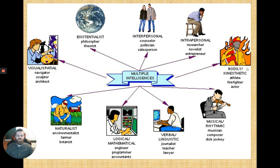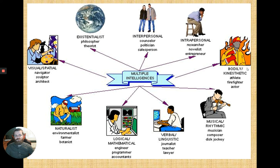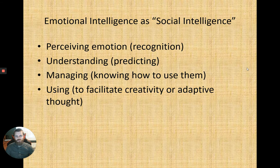Where you'd most likely see Gardner's intelligences is in their impact on career choice. For example, ranking high in interpersonal intelligence suggests careers like counselor, politician, or salesperson, because interpersonal means working well with others. By contrast, ranking high in intrapersonal intelligence suggests more independent careers like researcher, novelist, or entrepreneur, where you do a lot of work on your own.